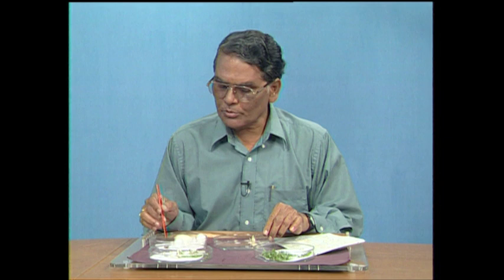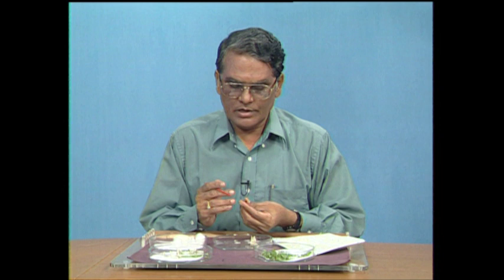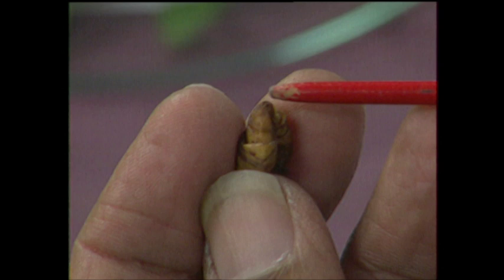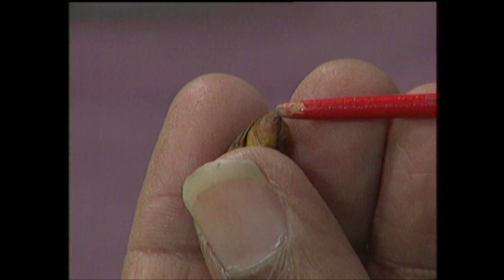The female pupa is usually bigger in size and has an X mark at the last abdominal segment, which is the female genital pore. The male pupa is smaller in size and has a dark point at the tip of the abdomen. This is how sex differences can be identified at the grainage stage.